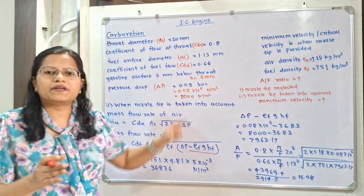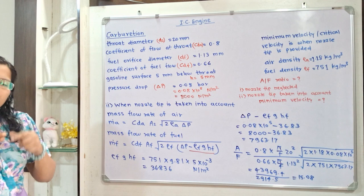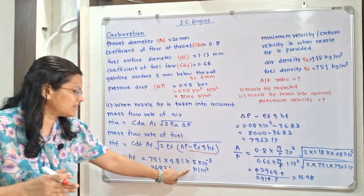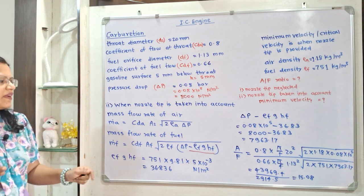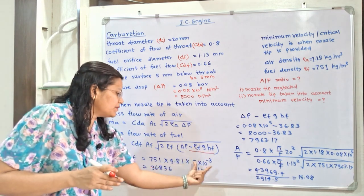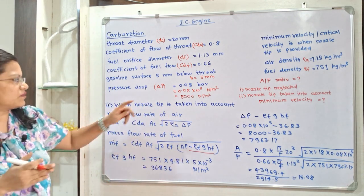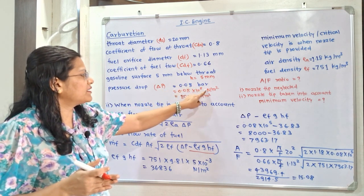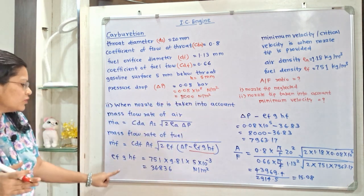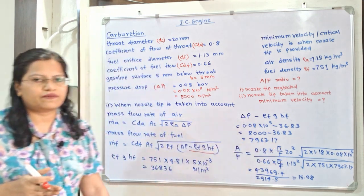First, calculate ρF g HF: ρF = 751, g = 9.81 m/s², HF = 5 mm = 5 × 10⁻³ m. This gives ρF g HF = 36.836 N/m². Then calculate ΔP − ρF g HF: ΔP = 0.08 × 10⁵ = 8000 N/m². So the net term = 8000 − 36.836 = 7963.17 N/m².